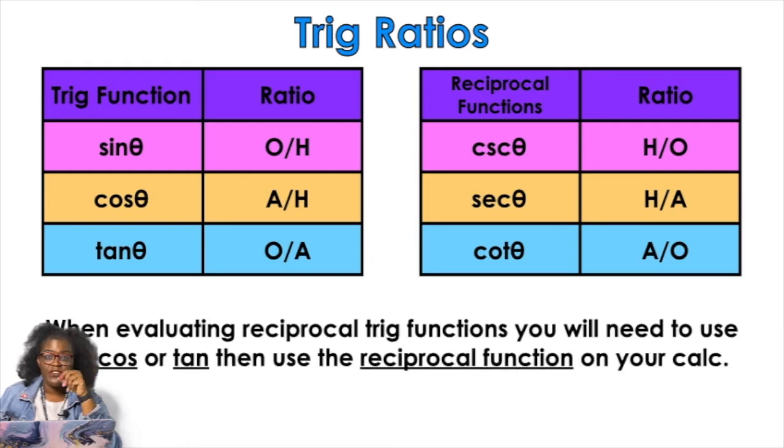So why is that important? When evaluating reciprocal trig functions, you will need to use sine, cosine, or tangent, then use the reciprocal function on your calculator. Sine, cosine, and tangent, there's functions for that in the calculator immediately. But there's not for cosecant, secant, and cotangent. You're going to have to use the reciprocal button after you find the sine, or after you find the cosine, or after you find the tangent.